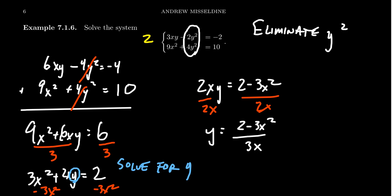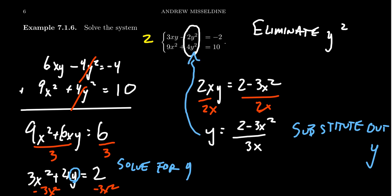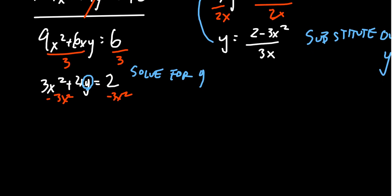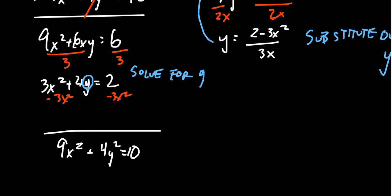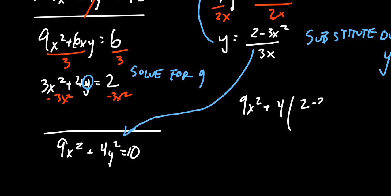Whenever you solve for a variable, it makes sense to substitute it. We're going to substitute out the y coordinate. The second equation seems a little bit cleaner, so we'll substitute y equals (2 minus 3x²) over 2x into the ellipse equation 9x² plus 4y² equals 10, giving us 9x² plus 4 times [(2 minus 3x²) over 2x]² equals 10.